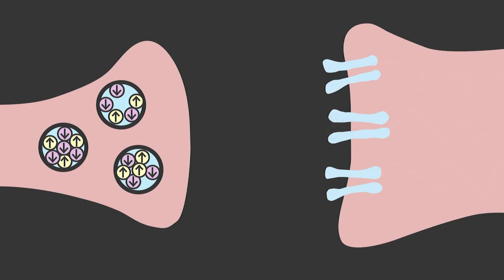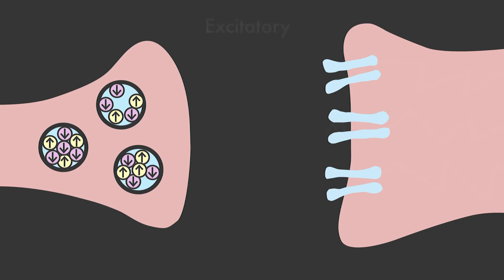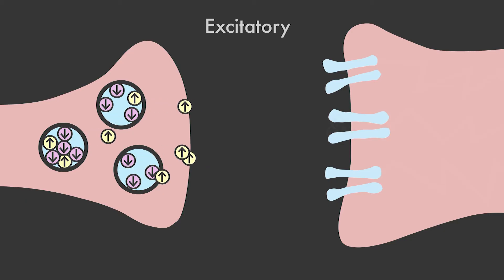Importantly, neurotransmitters can be classified by function. Excitatory neurotransmitters: these types of neurotransmitters have excitatory effects on the neuron. They increase the likelihood that the neuron will fire an action potential.